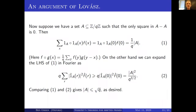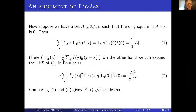As I say, I believe that argument is due to Lovász — he originally formulated it in the context of the Lovász theta function, but you can decode it into essentially a fairly elementary discrete Fourier transform argument.